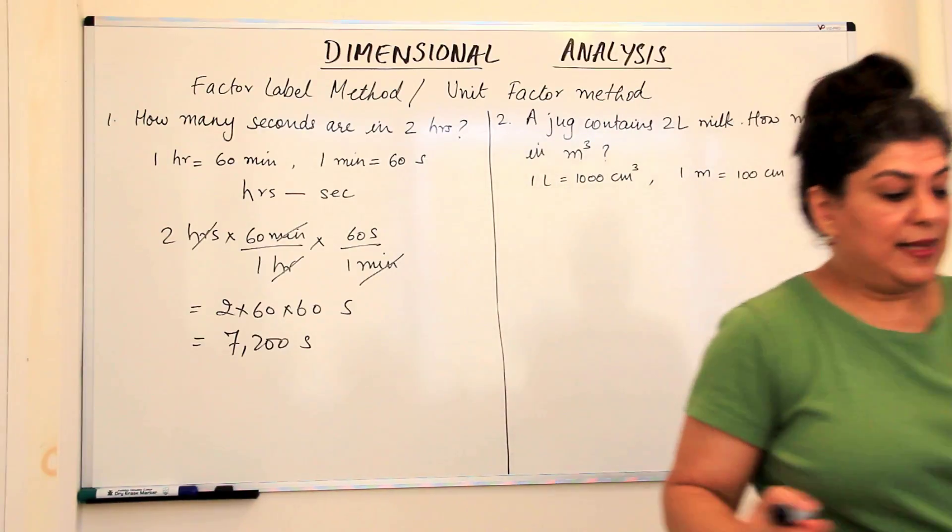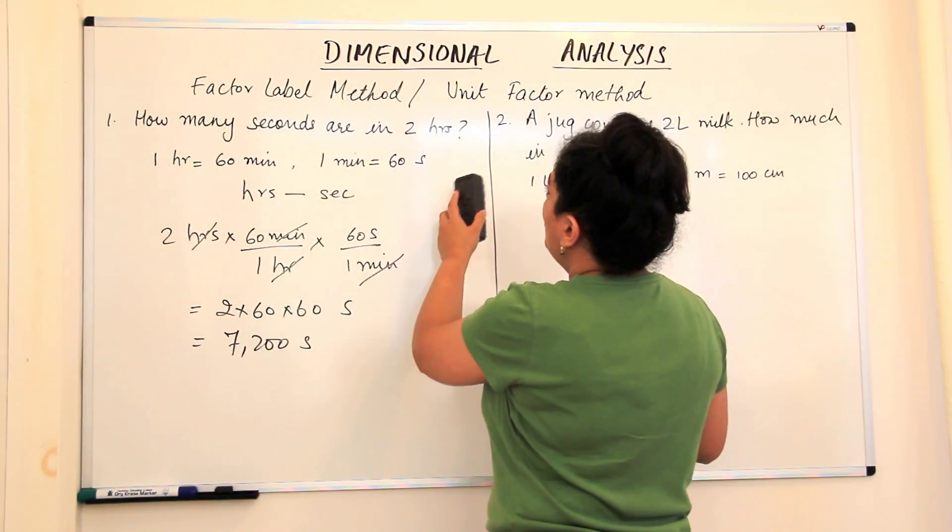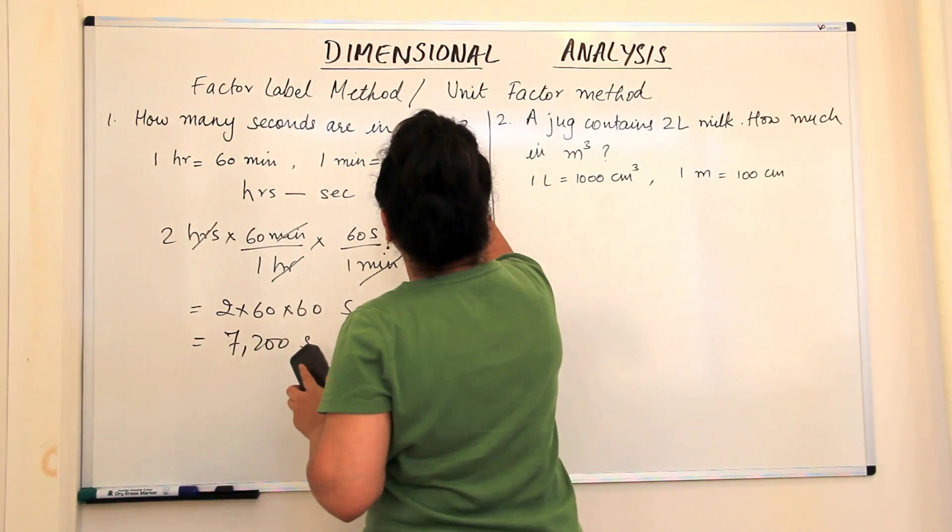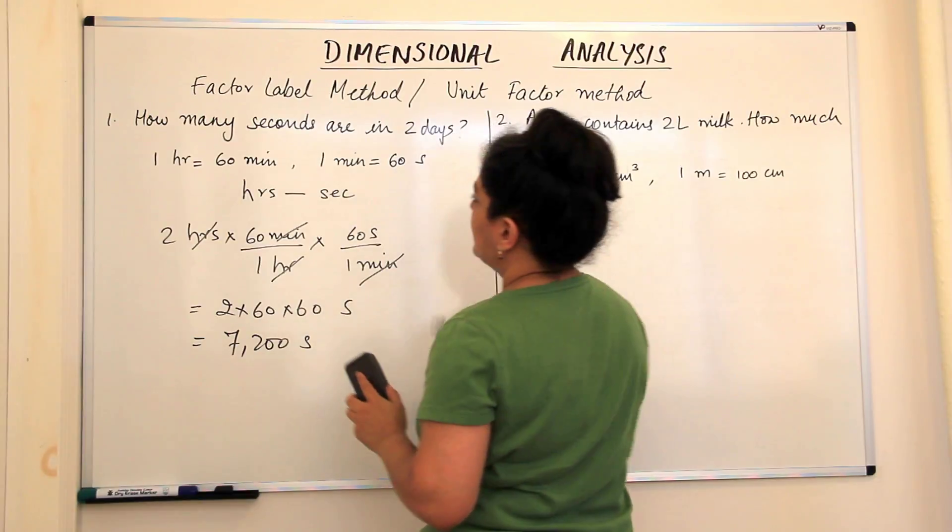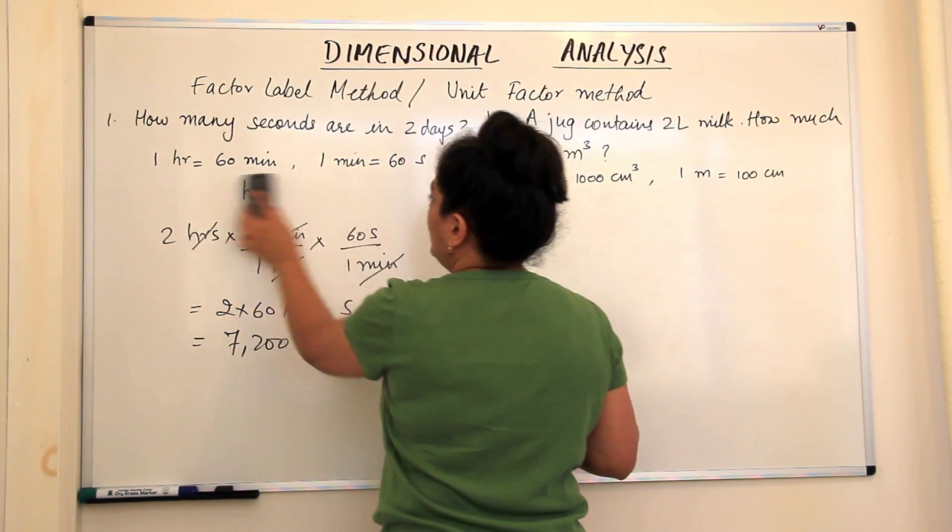Let us say that instead of two hours, we had two days and we wanted to convert two days into seconds. Then we would have had another conversion factor here and what would that be?